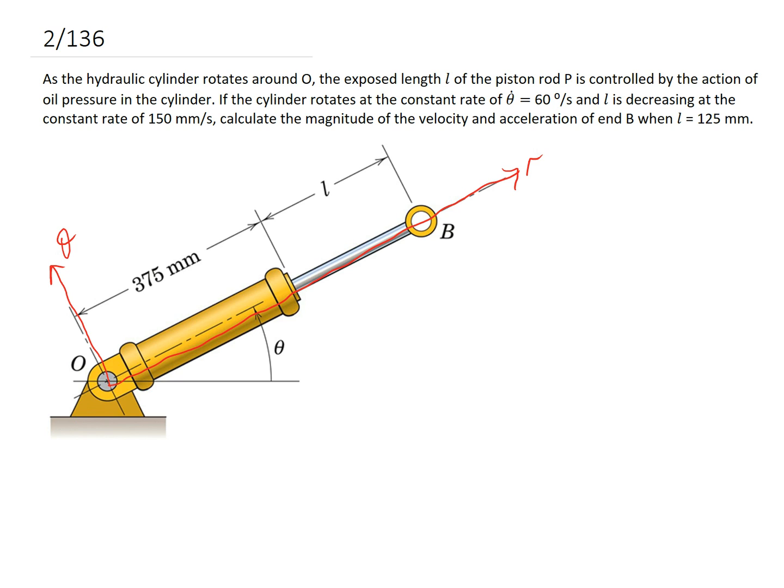So going through the information that we're given in the question, the first thing we're told is that the cylinder rotates at a constant rate of 60 degrees per second. So that means that theta dot is 60 degrees per second. And we can infer what theta double dot is. If it's at a constant velocity, it's going to have a zero acceleration. So theta double dot is zero.